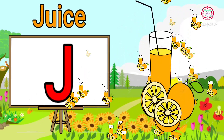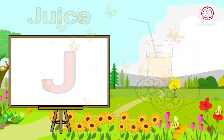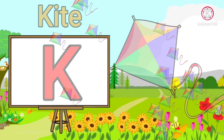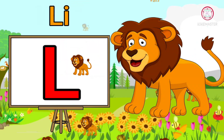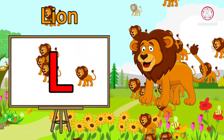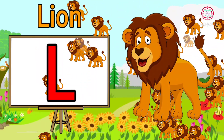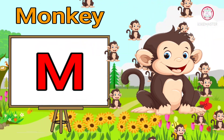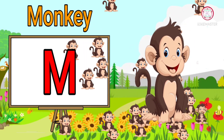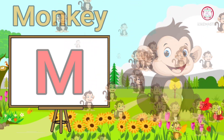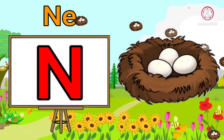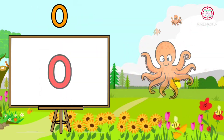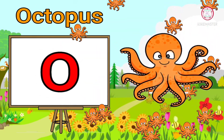J for juice. K for kite. L for lion. M for monkey. N for nest.